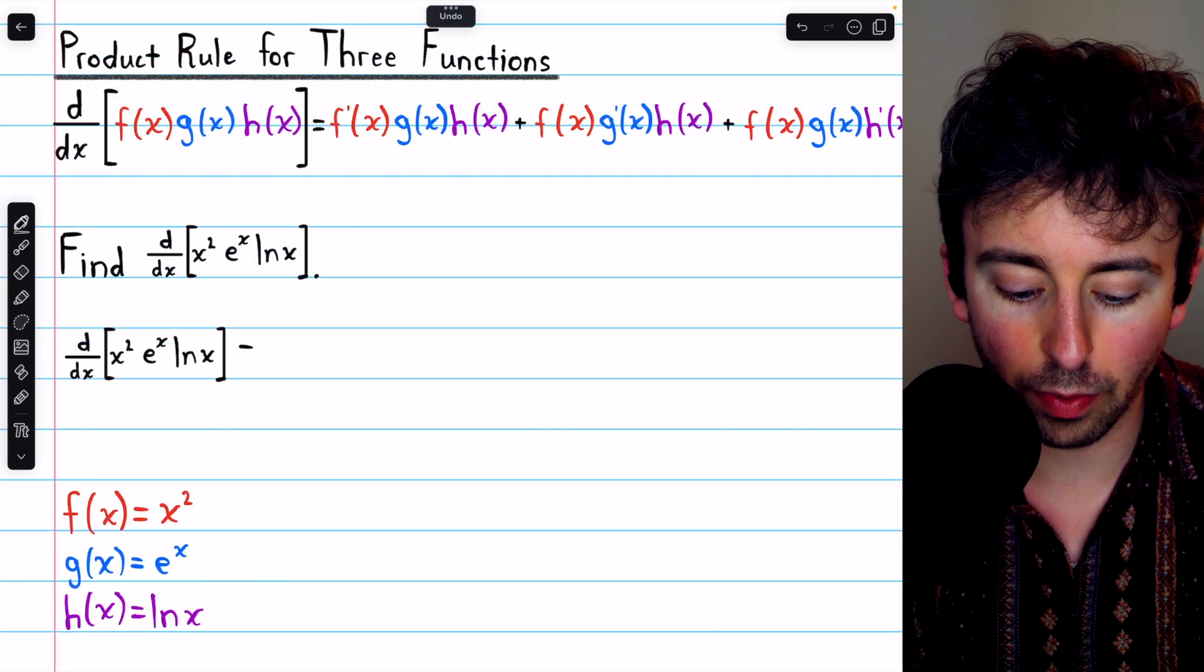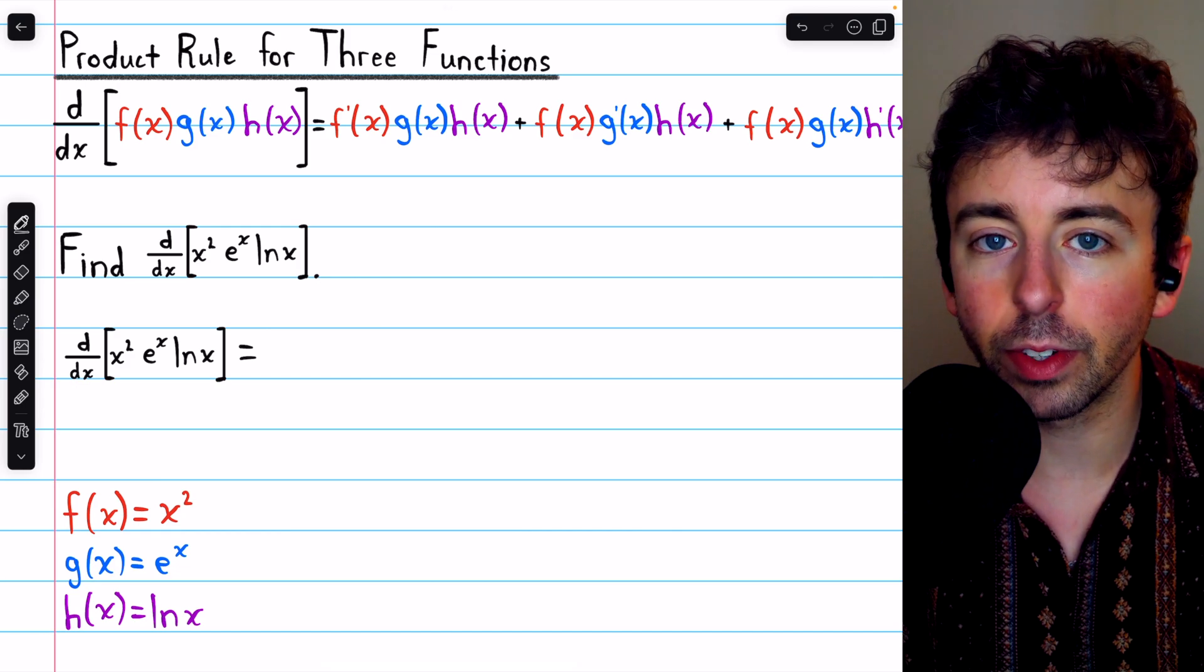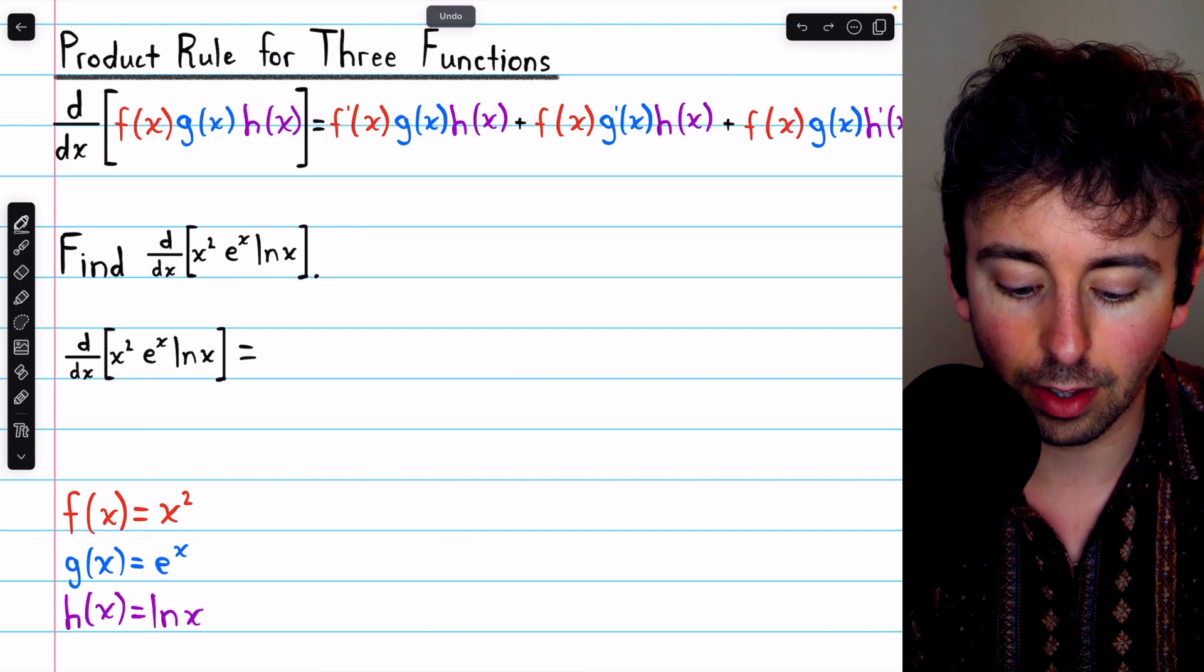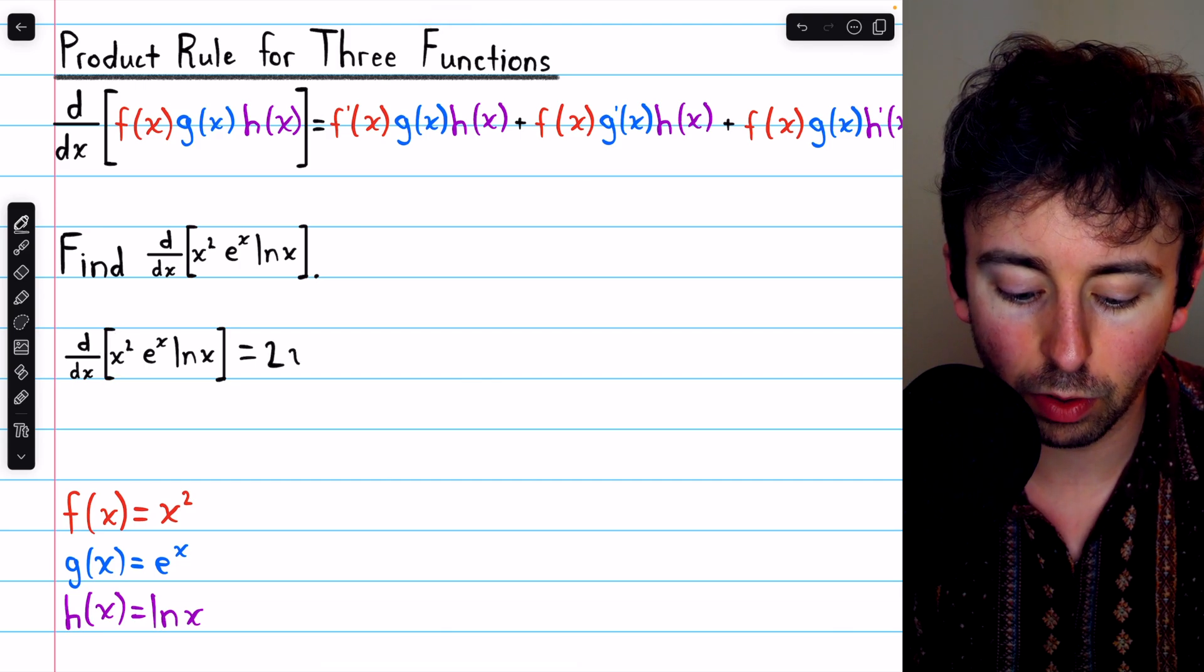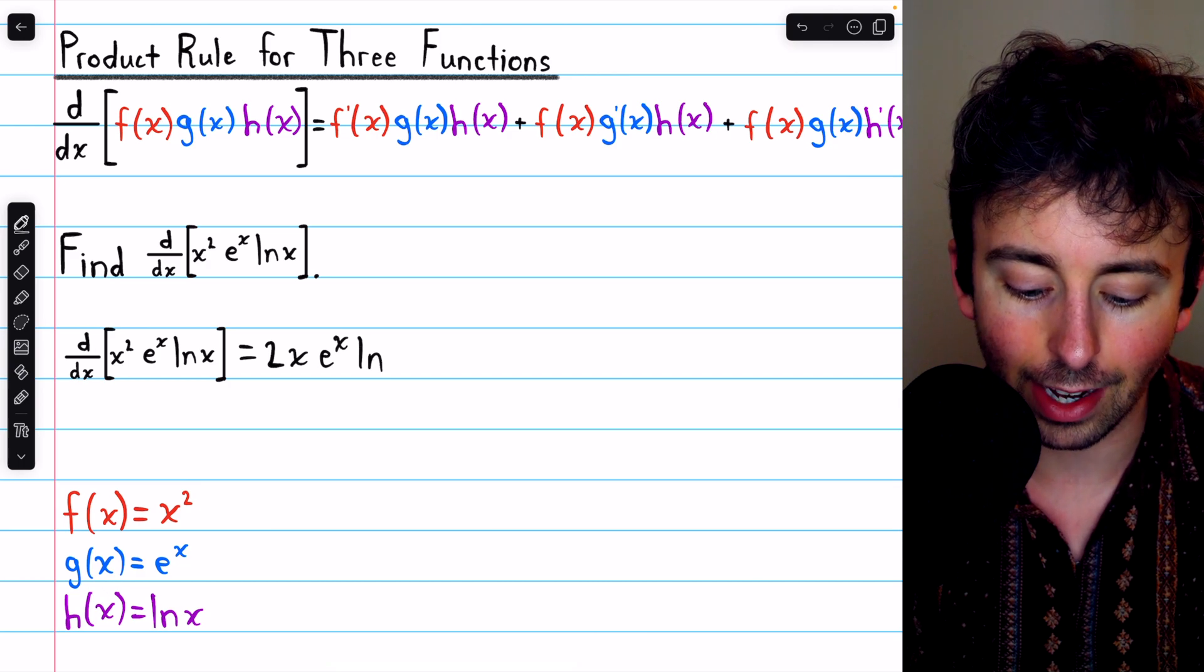So first, we'll multiply all the functions together, but take the derivative of the first function, the f prime. The derivative of f is the derivative of x squared, which of course is 2x. And then we just multiply that by e to the x and ln x.